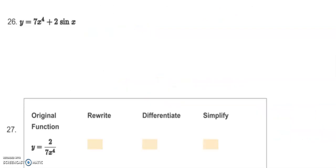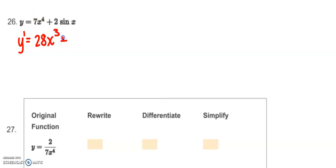For the first practice problem, we're just finding the derivative. y prime equals: swing the 4 down — 4 times 7 is 28 — and drop the power, which becomes x to the third. Plus, by the constant multiple rule, the 2 just hangs out in front, and the derivative of sine is cosine.